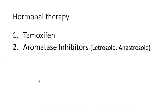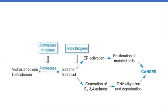Indications include tamoxifen and aromatase inhibitors like letrozole and anastrozole. Androstenedione and testosterone are actually hormone precursors, and aromatase acts on them so that estrogen will be produced. The action of aromatase inhibitors like letrozole and anastrozole is to inhibit this enzyme so that they will not be able to convert these precursors into estrogen forms.